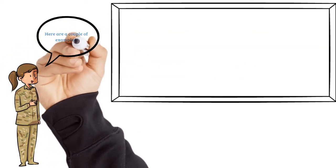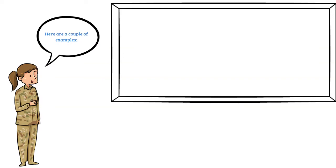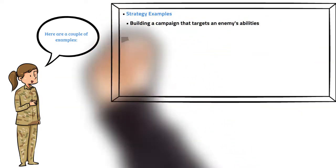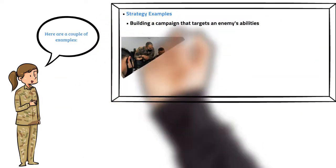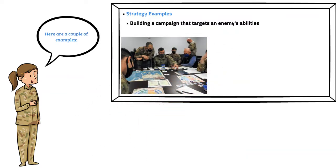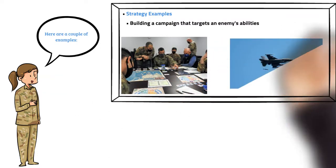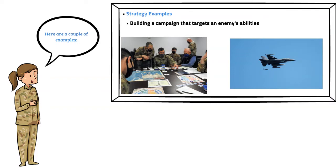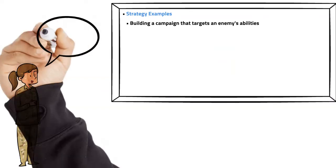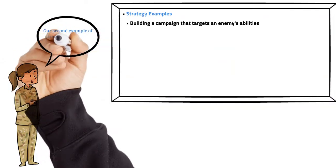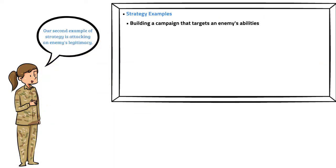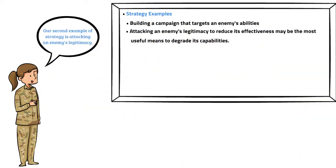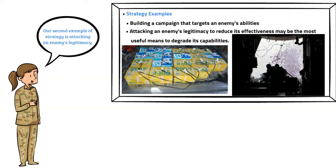Here are some examples for strategy. Building a campaign strategy that targets an enemy's abilities by using the minimum necessary forces and reducing collateral damage may be vital for operational effectiveness. Another example: attacking an enemy's legitimacy to reduce its effectiveness may be the most useful means to degrade its capabilities.